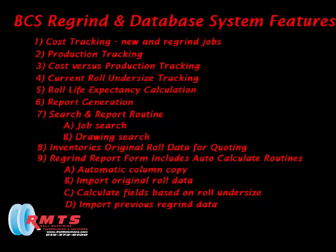9. The regrind report form also includes automatic routines for: 10. Automatic column copy. 11. Import original roll data. 12. Calculate fields based on current undersize. 13. Import previous regrind data. The system comes in two versions: a read-write version and a read-only version. The read-only version is designed for tube producers themselves who simply need the ability to import the completed regrind data, update their costs and production, and generate reports.